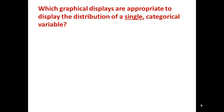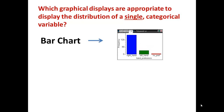Which graphical displays are appropriate to display the distribution of a single categorical variable? A bar chart. In a bar chart, you put the values that the categorical variable takes on on the horizontal axis, and their corresponding frequencies in counts, proportions, or percents on the vertical axis. Displayed at right is a bar chart for hand preference, which takes on the values right hand, left hand, or no preference.